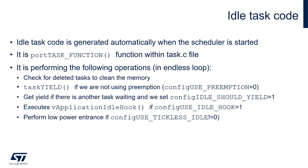A short reminder about idle task code: it is stored in portTASK_FUNCTION within task.c. Even if we enable the idle hook, it may not be executed if other conditions checked earlier in the handler are met — for example, if any task with higher priority is in the ready state, if we are in cooperative mode and configIDLE_SHOULD_YIELD is enabled, or if another task at the same priority becomes ready. Under those conditions, the idle task may be preempted before reaching the hook call.